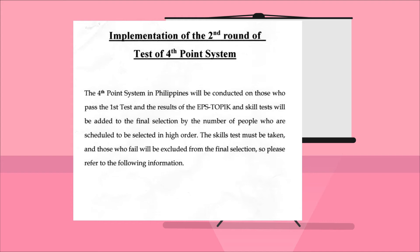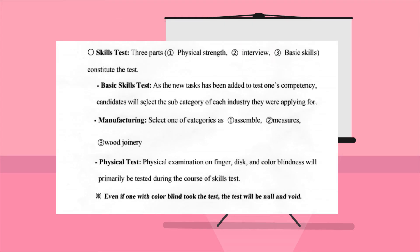The skills test has three parts: physical strength, interview, and basic skills. For the basic skills test, a new task has been added — candidates will select the subcategory of each industry they are applying for. Under the manufacturing industry, this includes: 1. assemble, 2. measure, and 3. wood joinery. For the physical test, examination on finger, disc, and color blindness will primarily be tested. They also test your hand grip and back muscle strength. Remember that if a color-blind applicant takes the test, the test will be null and void.